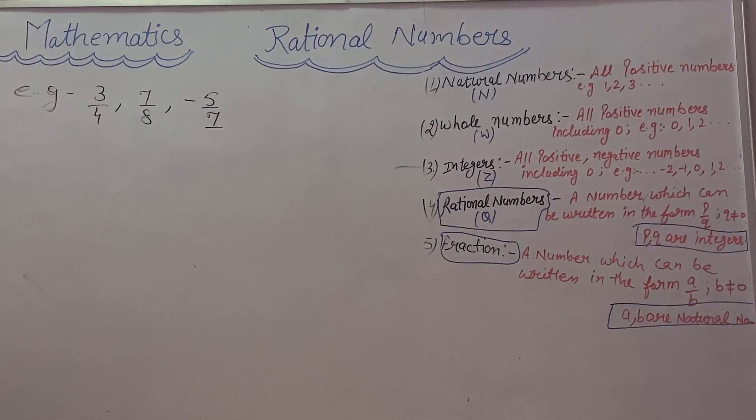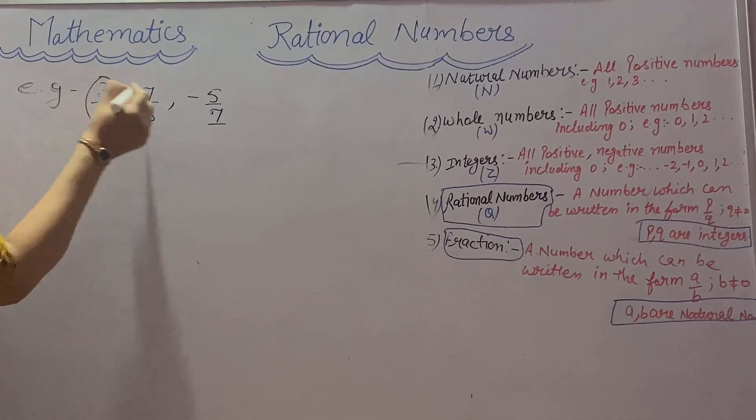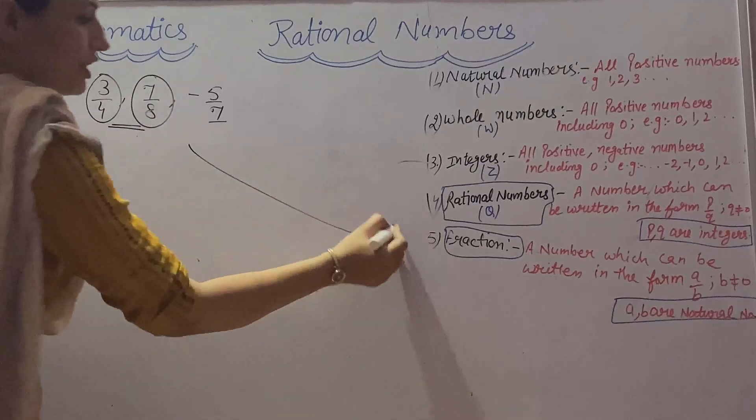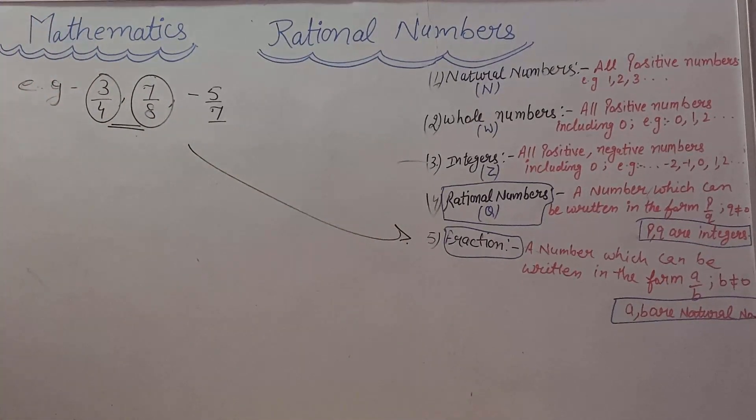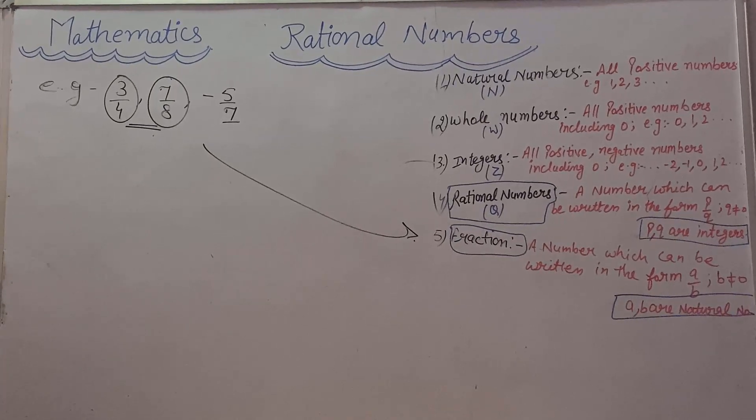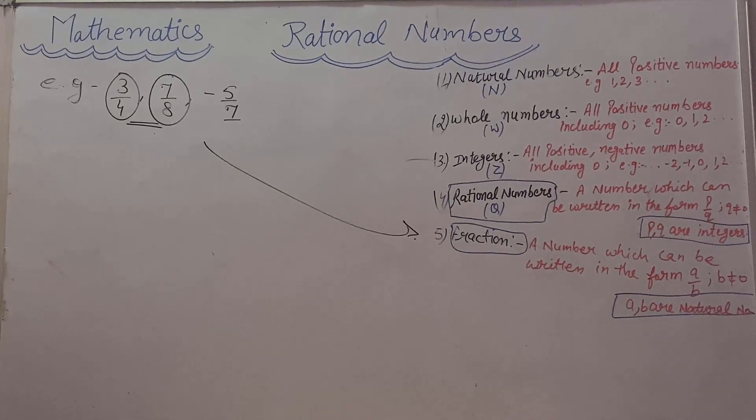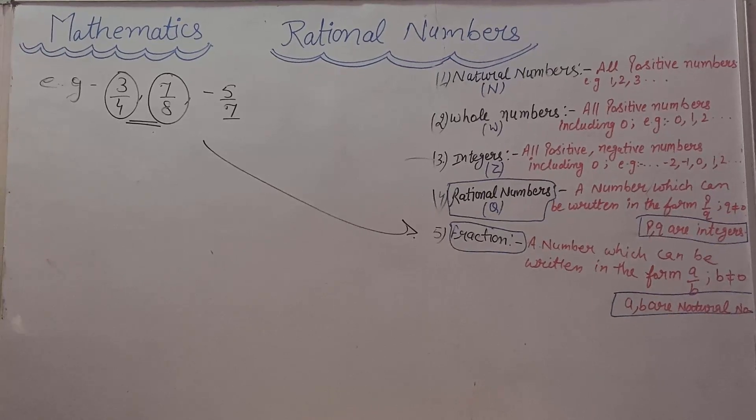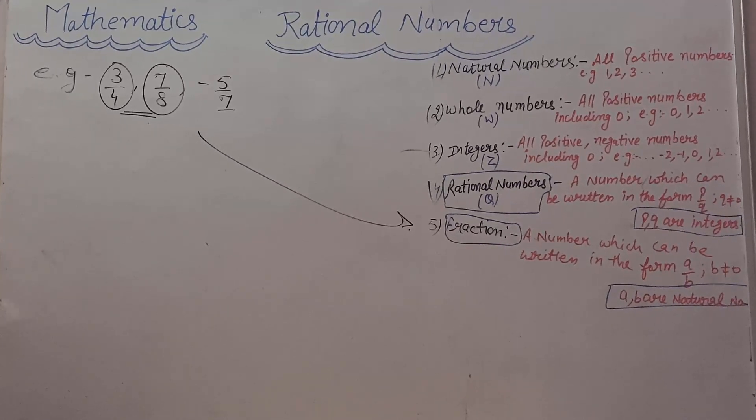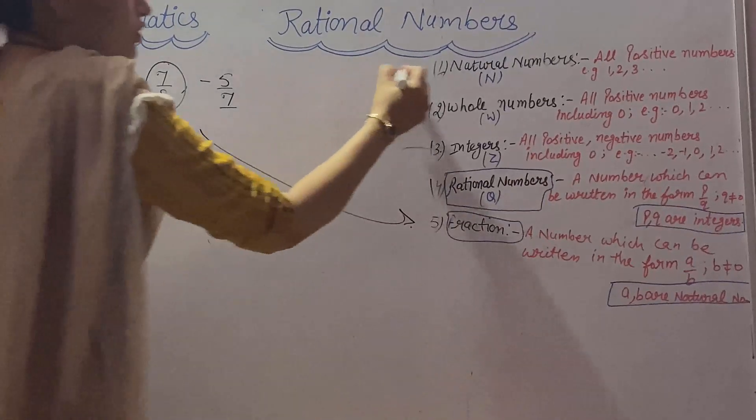Now you are thinking 3 by 4 and 7 by 8 are also fractions. So what is the difference between a fraction and a rational number? A fraction can be written in the form A by B where B is not equal to 0 and A, B are natural numbers.